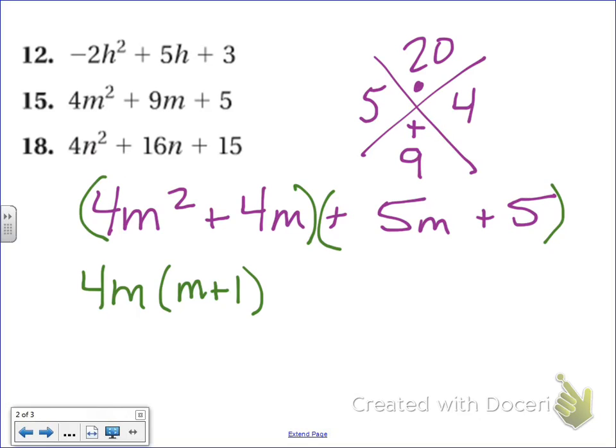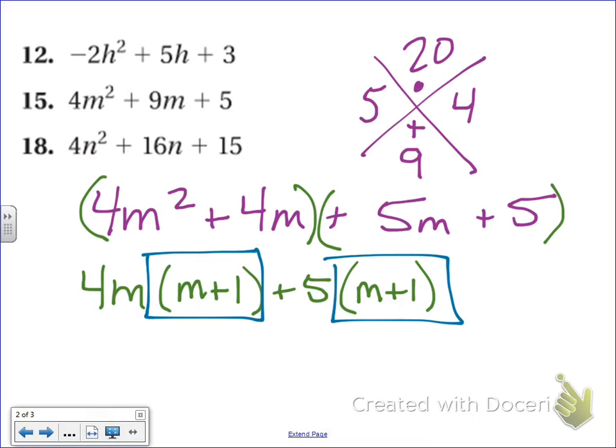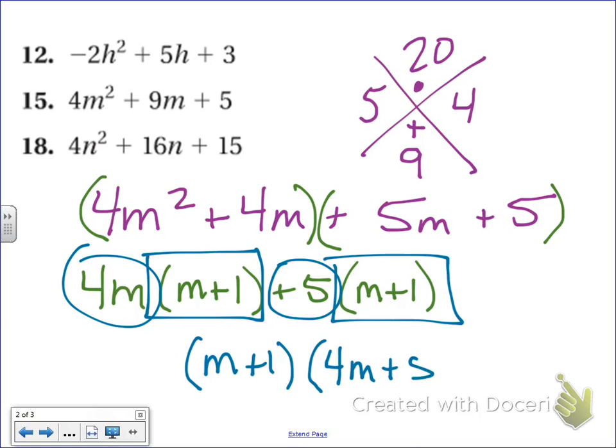In the second set of parenthesis, I could take a 5 out of both, and then I'm left with m plus 1. Perfect. So the parenthesis match, m plus 1, so I only need to write it once down below. And then the leftovers go in my other parenthesis, 4m plus 5. So there are good examples of how to factor trinomials.